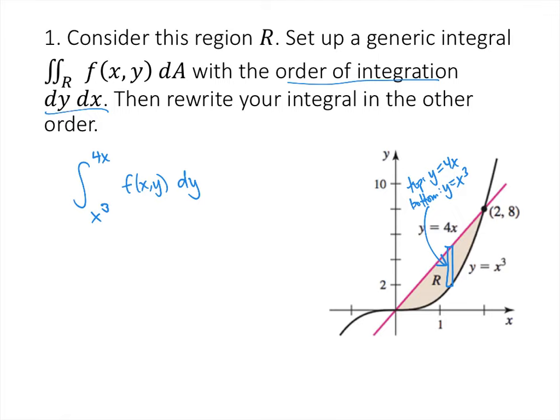My outer integral is going to go from my lowest x value up to my highest x value. The lowest x value is at the point (0, 0) and the highest x value is at the point (2, 8). So I integrate from 0 to 2 with respect to x. That's my iterated integral in the order dy dx.